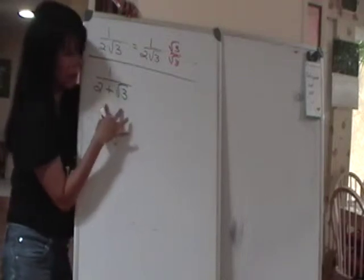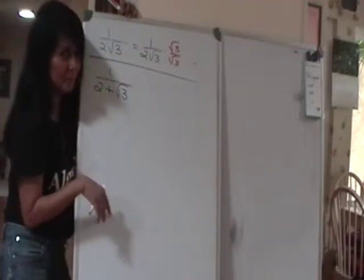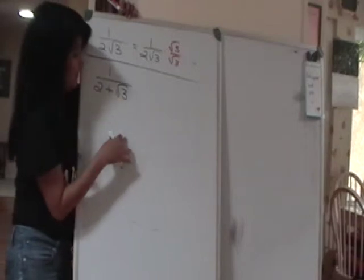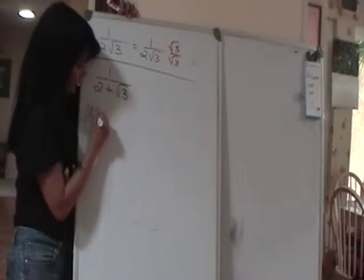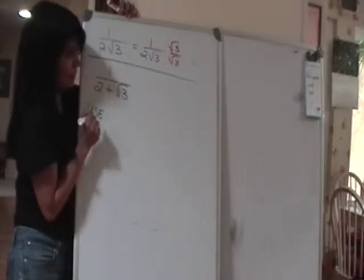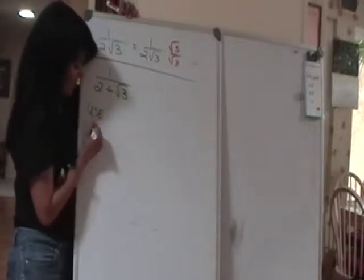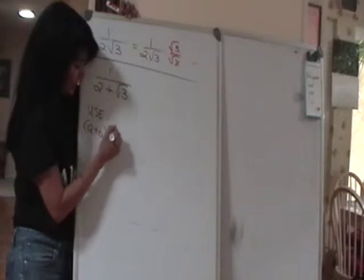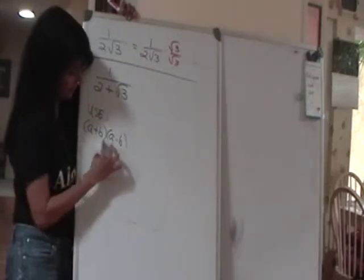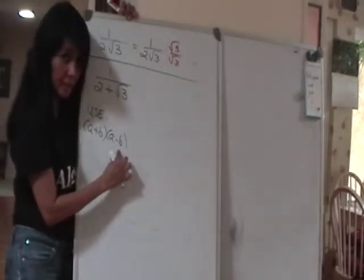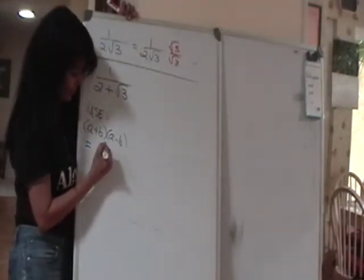We have two things here — this is like a binomial — and we want to kick out the square root of 3. The thing to do here is use the special product we met when we were doing polynomials: (a + b)(a − b). When you multiply these two quantities — they're almost alike except one is the sum and the other is the difference — the answer is the difference of squares: a² − b².